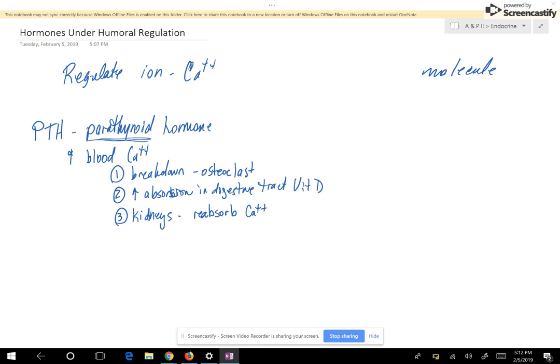The hormone that is going to decrease blood calcium levels is calcitonin. Calcitonin is secreted by the thyroid gland. Calcitonin is going to decrease blood calcium levels. But you also need to keep in mind that parathyroid hormone is going to have a major effect on calcium levels where calcitonin has a minor effect on calcium levels.